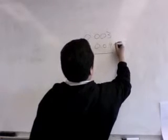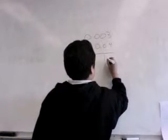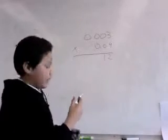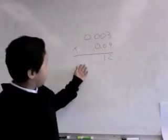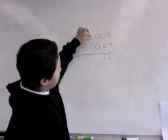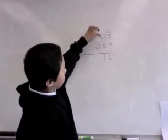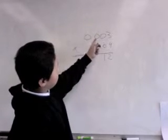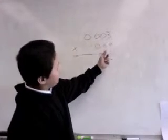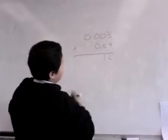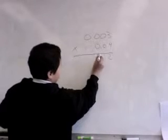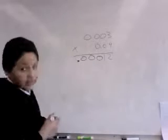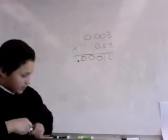Now 4 times 3 is 12. Now that I lined it up and did the problem, I need to count how many numbers were behind each decimal from the first number to the bottom number. So that would be 1, 2, 3, 4, 5. There's 2 numbers, so I would need 3 more zeros: 1, 2, 3, and then put the decimal. That's how you multiply with decimals.